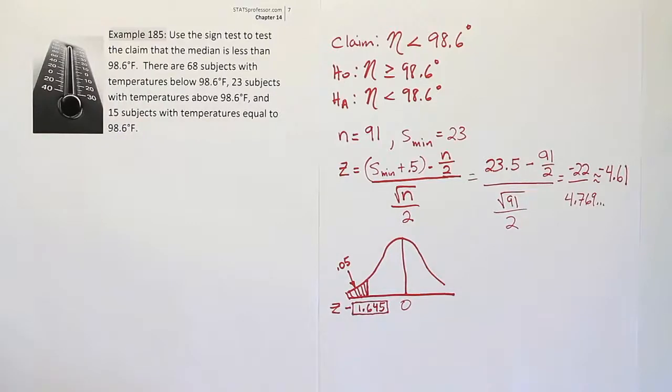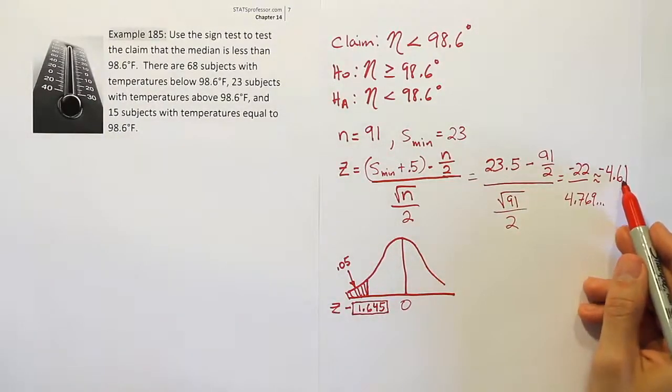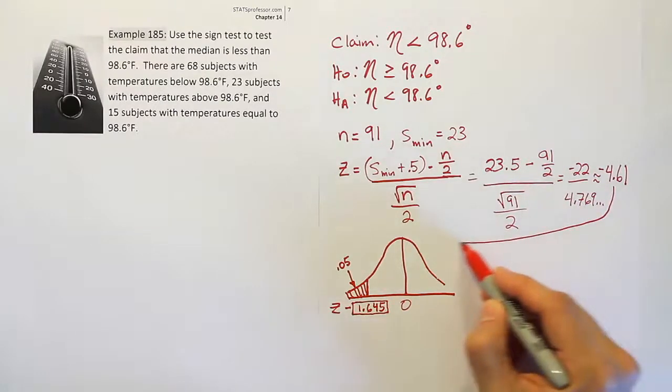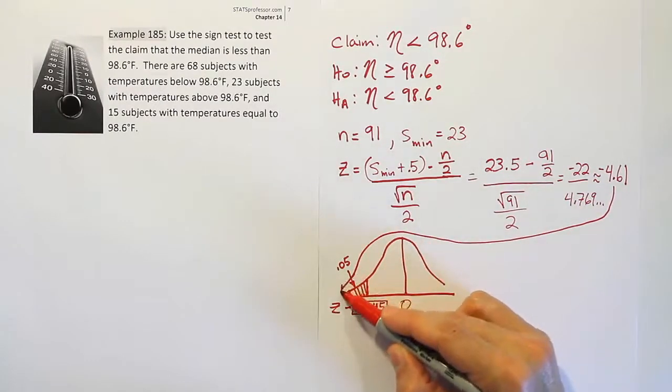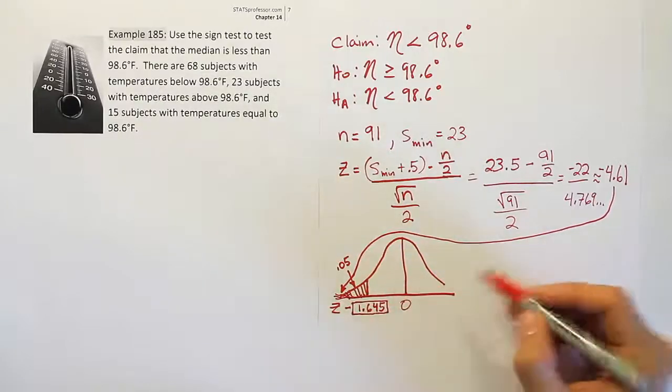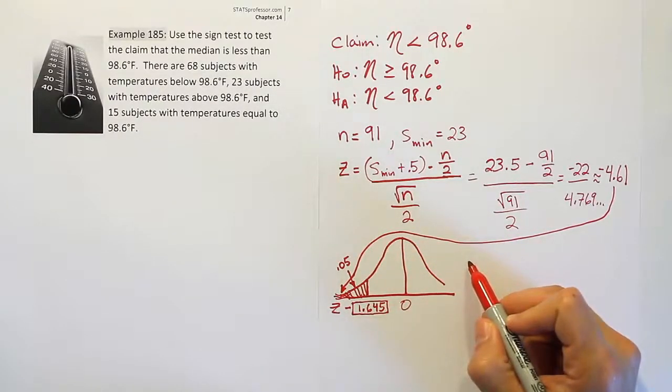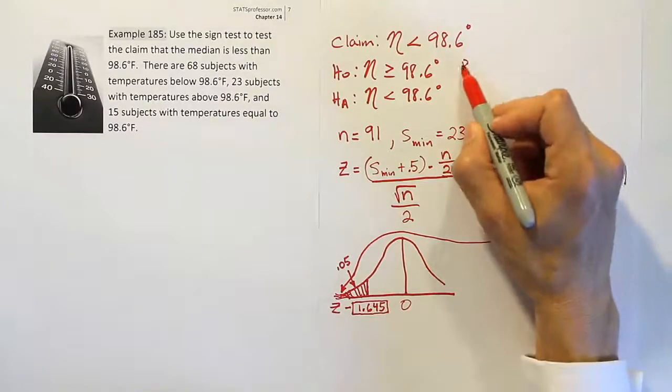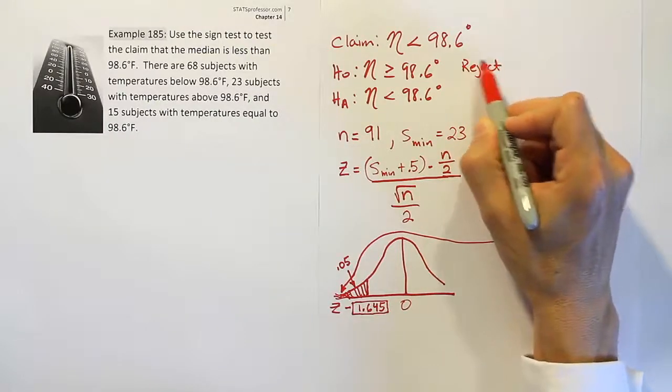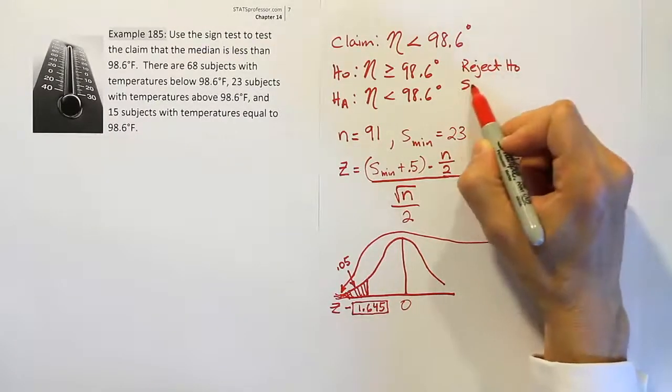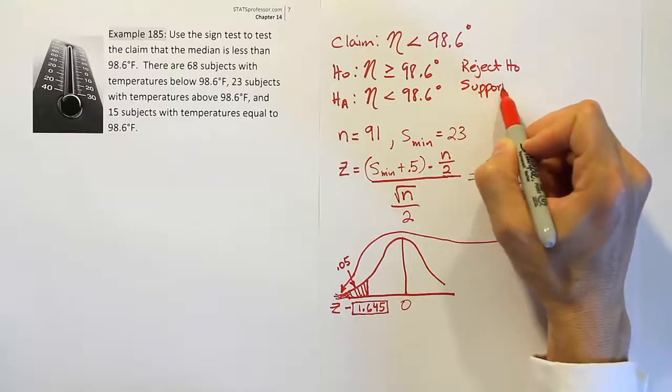That's our critical value, and we're going to compare that critical value to our test stat. You can see this test stat is quite extreme. It is going to definitely land inside the rejection region. With that, we're going to conclude that we should reject H0 and therefore support HA.